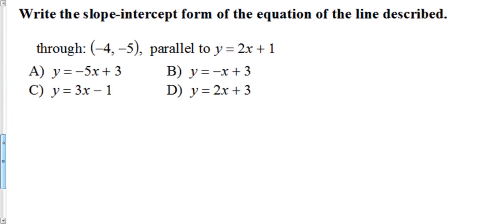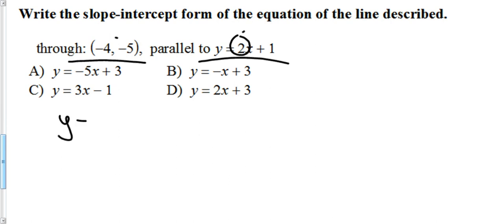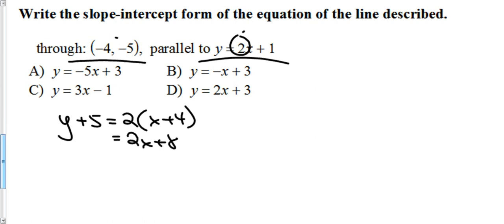One more parallel example: through (−4, −5) parallel to y = −2x + 1. The slope stays −2. Using point-slope form: y − (−5) = −2(x − (−4)) → y + 5 = −2(x + 4). Distributing: y + 5 = −2x − 8. Subtract 5: y = −2x − 13. Wait — distributing −2 times 4 gives −8, plus the −5 gives y = −2x − 3 → answer is D.